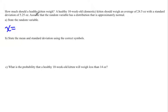So in this case we're talking about a kitten's weight. A 10-week-old kitten should weigh on average 24.5 ounces with a standard deviation of 2.52 ounces. And we are going to assume that the random variable has a distribution that is approximately normally distributed.